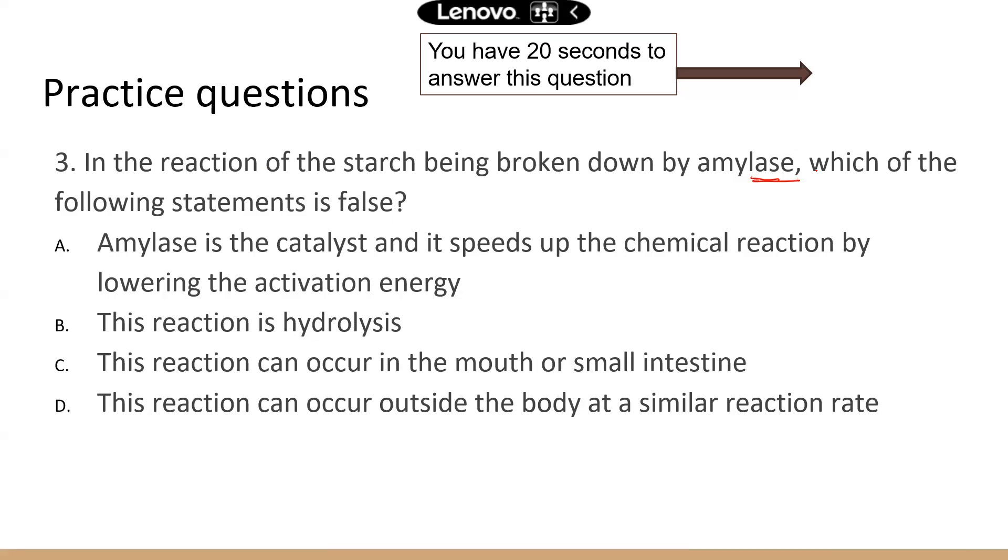And also we're talking about chemical reaction rate, so chances are this is an enzyme that can break down starch. So which one is the false statement? Is it A? Amylase is the catalyst and it speeds up chemical reaction by lowering the activation energy. That's a correct statement. So that's not the answer.